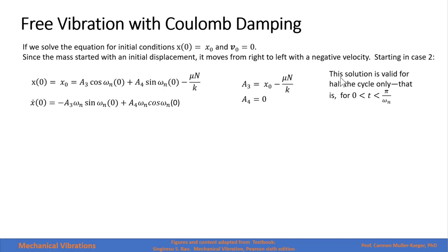Since the mass started with an initial displacement, it moved from right to left with a negative velocity. So let's start with case 2, and then we are able to find the constants A₃ and A₄, A₃ being this over here, and A₄ being equals to 0.